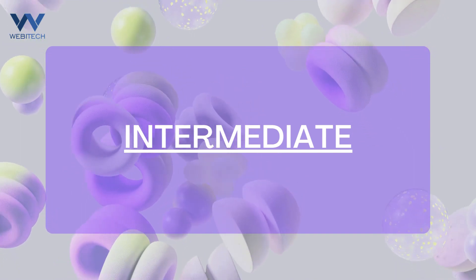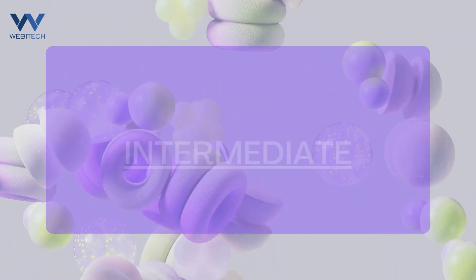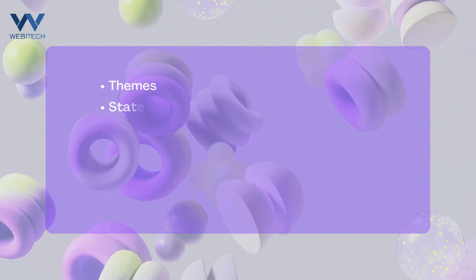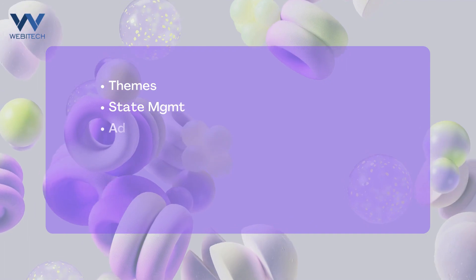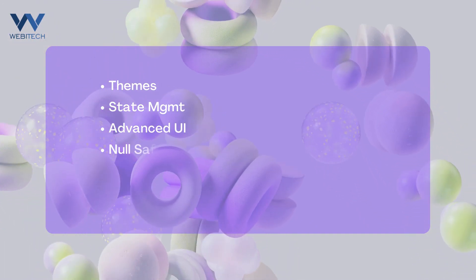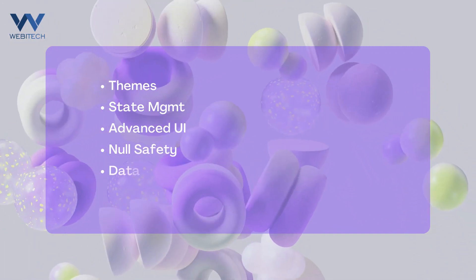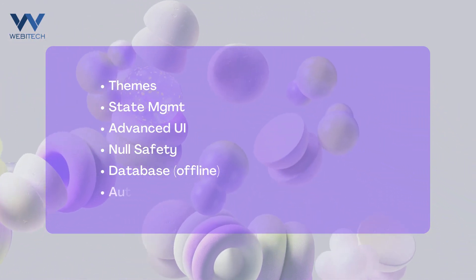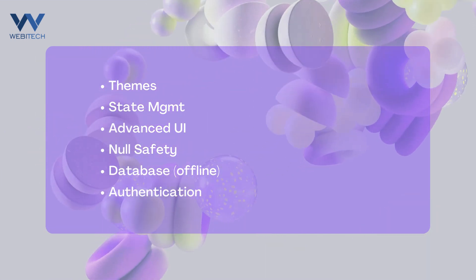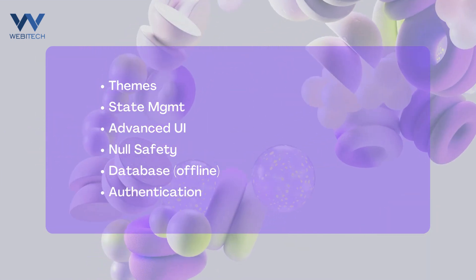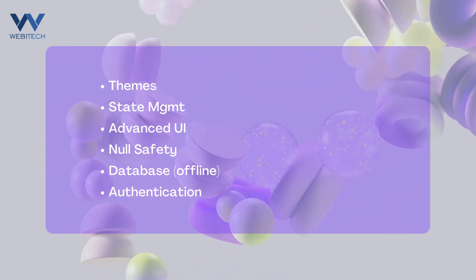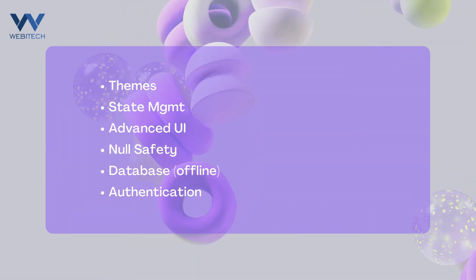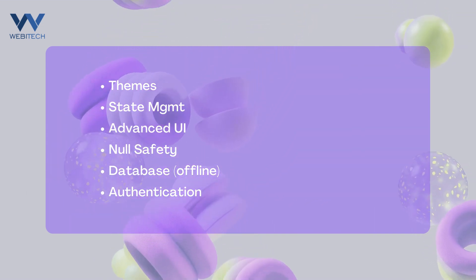For the intermediate level, the first topic is going to cover theming. For example, I'll show you how to use light mode and dark mode. Then we are going to move forward to state management as we get more screens and the app grows in size, and then we'll look at some advanced UI by building a minimal e-commerce app with a beautiful design.